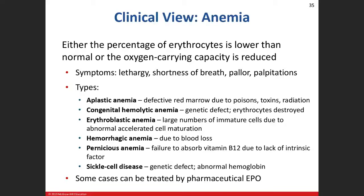Let's talk about anemia — when things go wrong with your red blood cells and they cannot carry oxygen like they should. Symptoms include lethargy, because you can't carry oxygen to make energy; shortness of breath, because your body tries to oxygenate your blood more; pallor — you look pale; and palpitations, because your heart beats faster trying to deliver what oxygen it has.